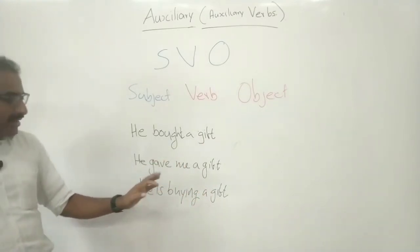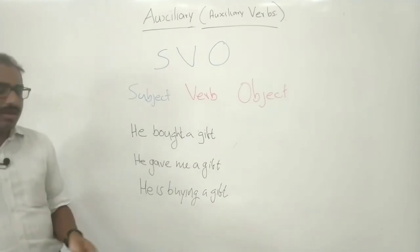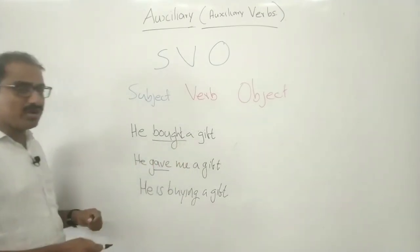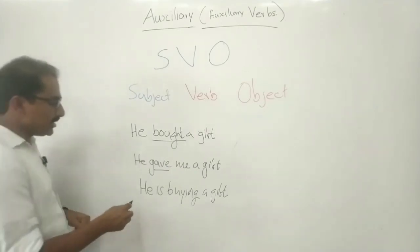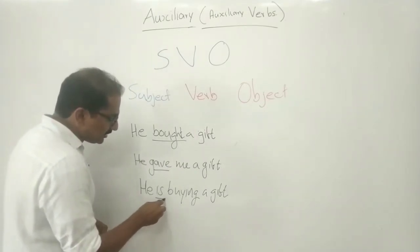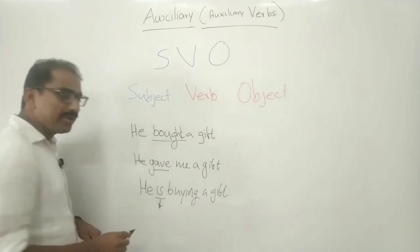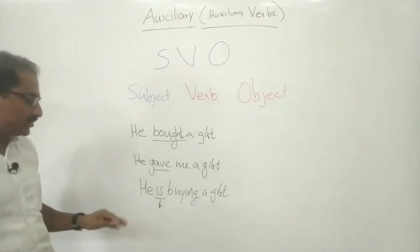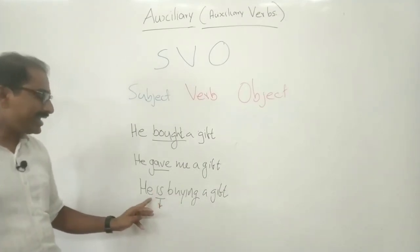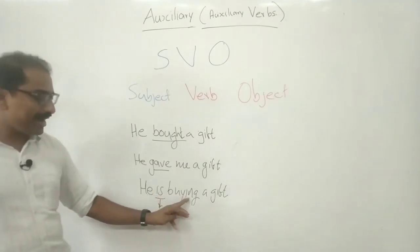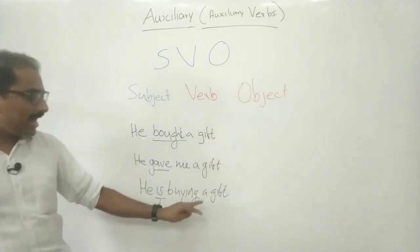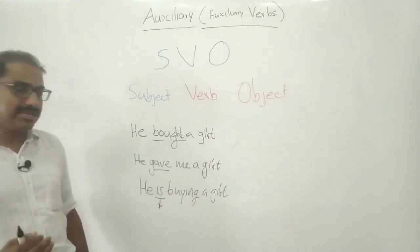And 'He is buying a gift.' Here you can see that gave and bought are main verbs in their sentences. In this sentence, 'is' is used as a helping verb — that means an auxiliary. So this auxiliary is part of the main verb. He is the subject, 'is buying' is part of the verb, and 'a gift' is the object. 'A' is an article in the sentence.